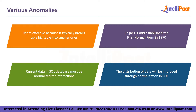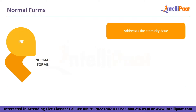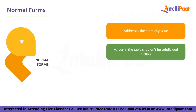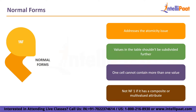The first normal form, 1NF, addresses the atomicity issue. Atomicity means that values in a table shouldn't be subdivided further — one cell cannot contain more than one value. A table violates 1NF if it has a composite or multi-valued attribute. For example, a college student enrolled in multiple courses should have each course in a separate column or atomic table linked to that student.